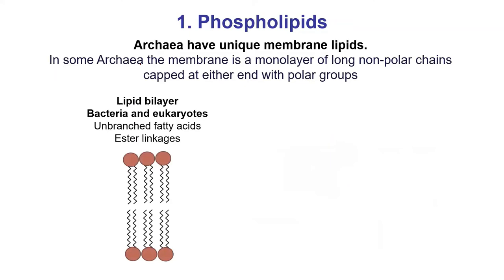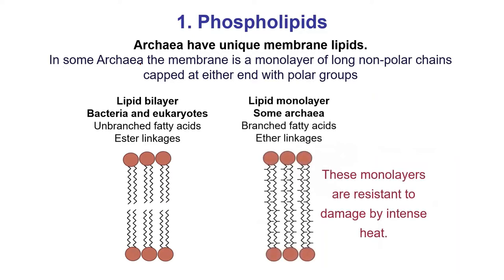Here's something interesting about archaea — we'll cover them in more detail next unit. This diagram shows a phospholipid bilayer found in bacteria and eukaryotes, but archaea do things a little differently. Some archaea have monolayers rather than bilayers. The chemistry is also different: their fatty acids are branched and they have ether linkages instead of ester linkages. These monolayer types are found in organisms that live in really hot environments. This is part of why archaea have their own domain.